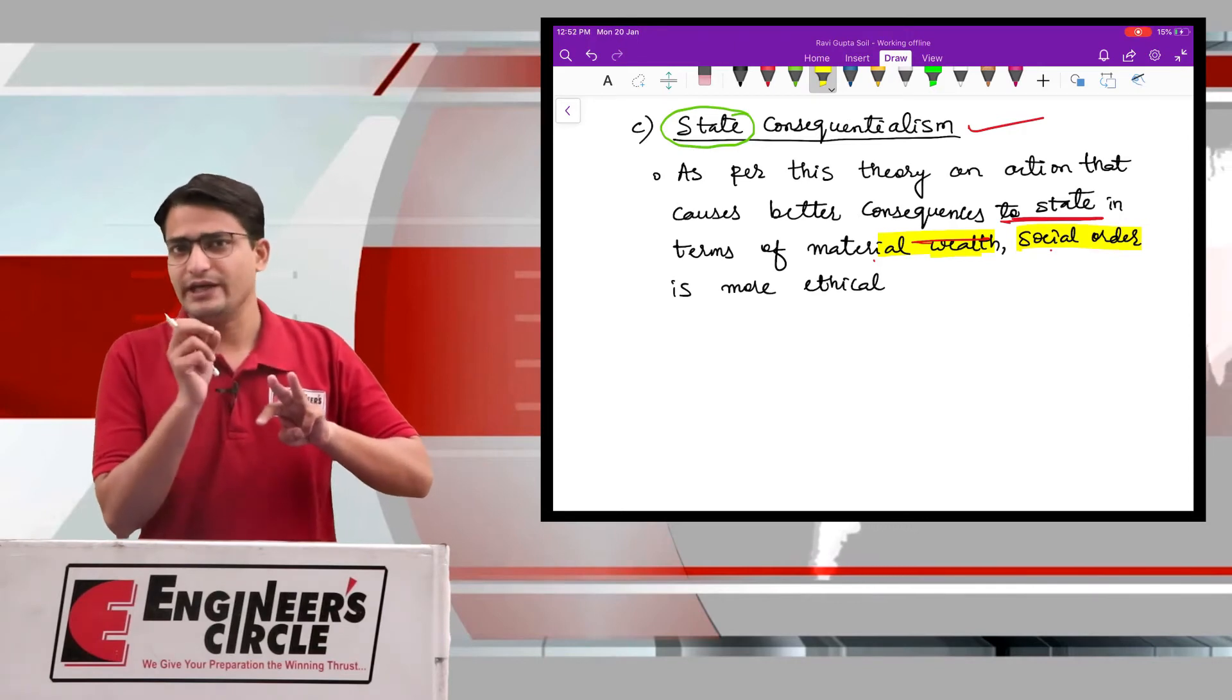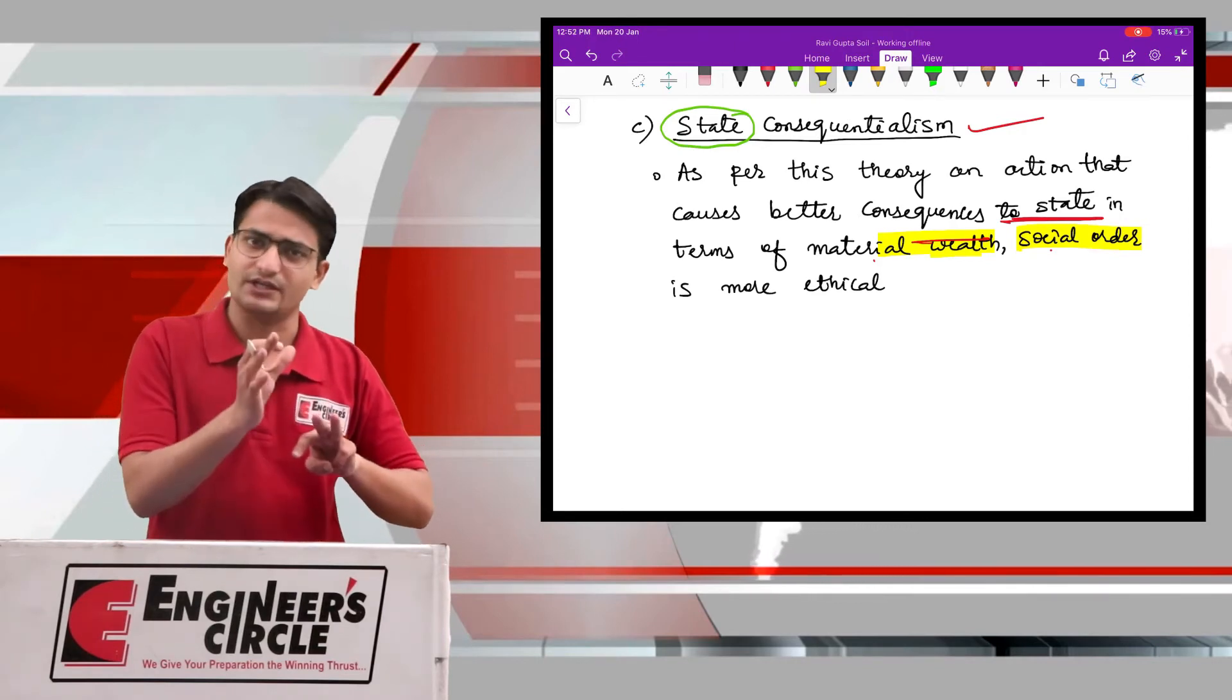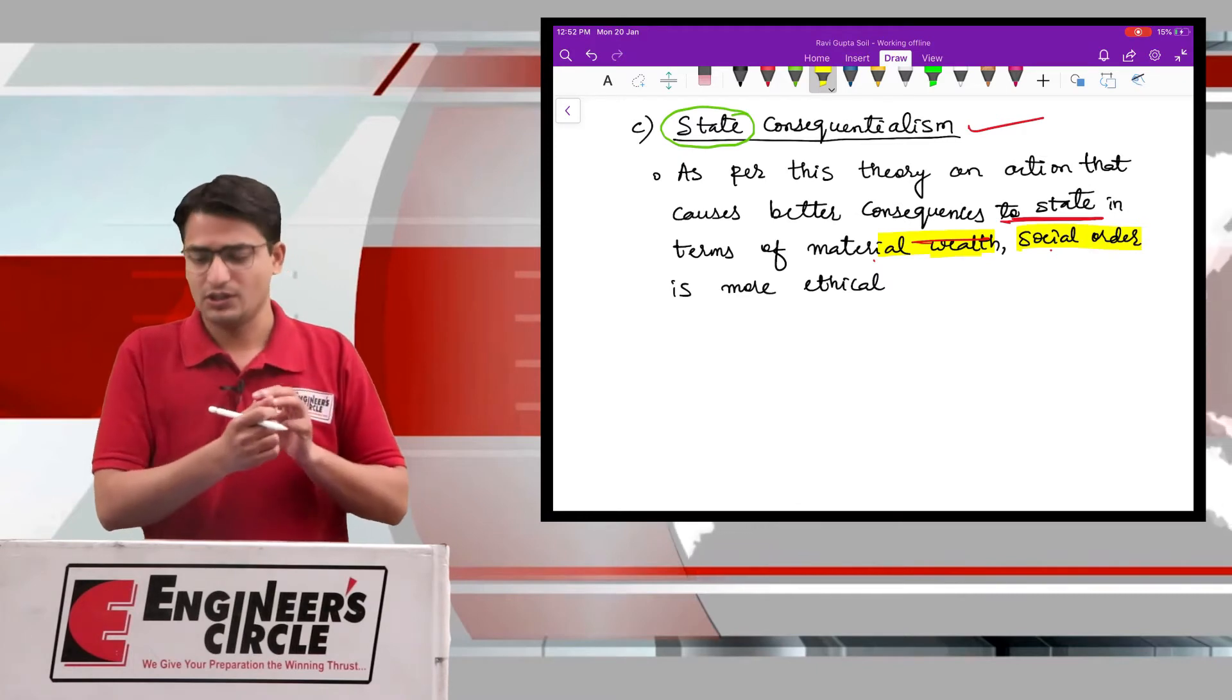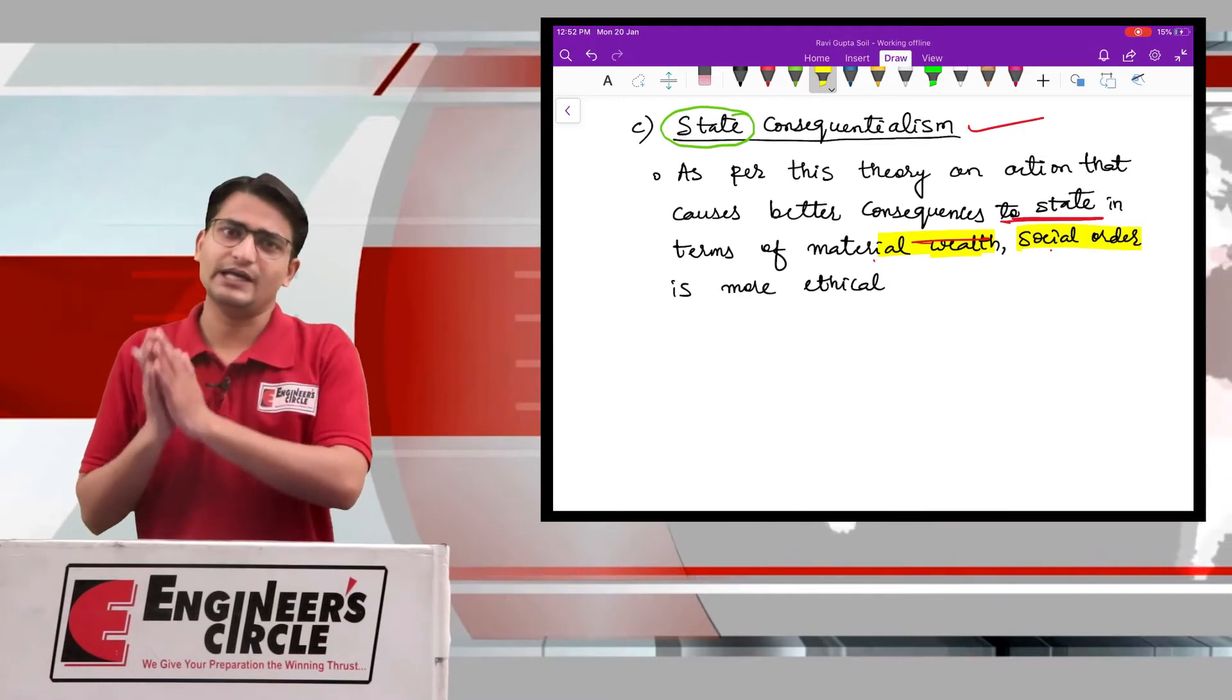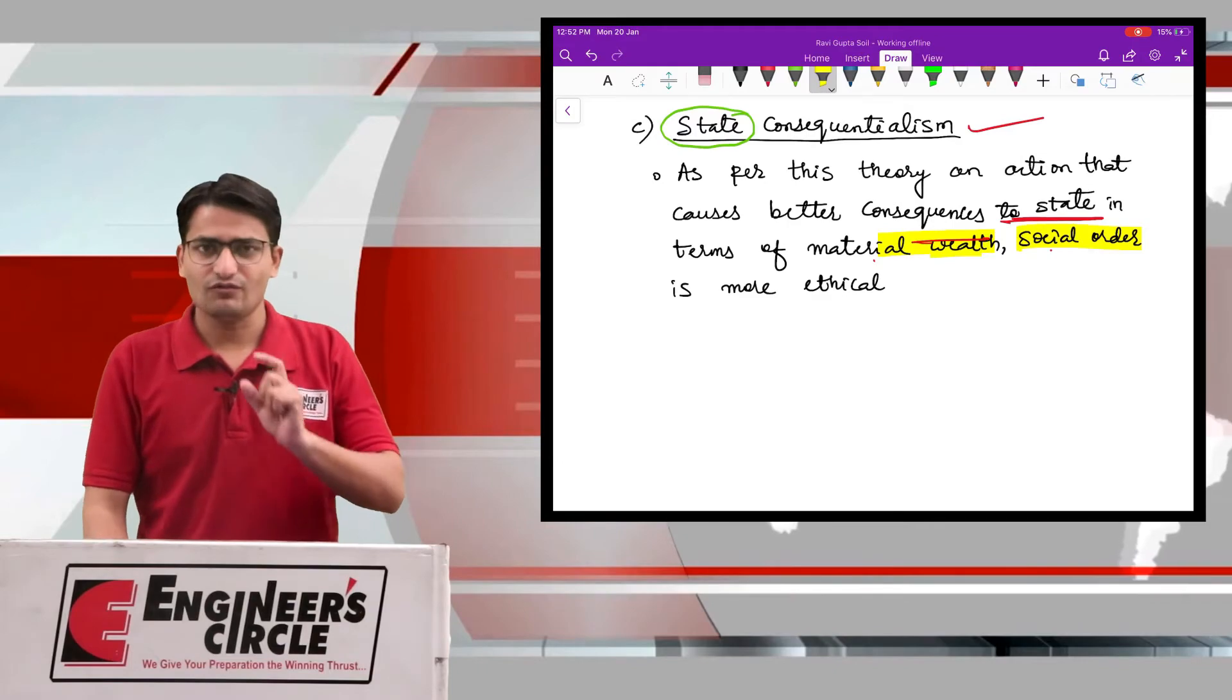And the third is state consequentialism. It is saying that the action which benefits the state, in other words, the governing body or the society as a whole, that should be the ethical action. This was teleological.